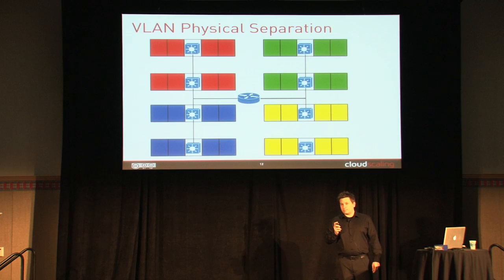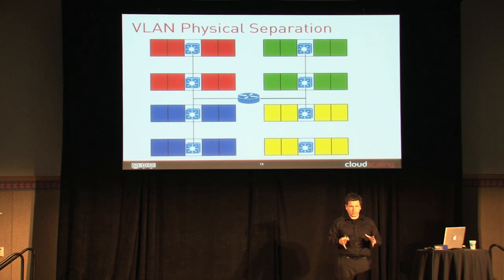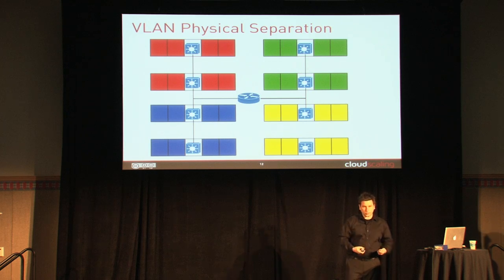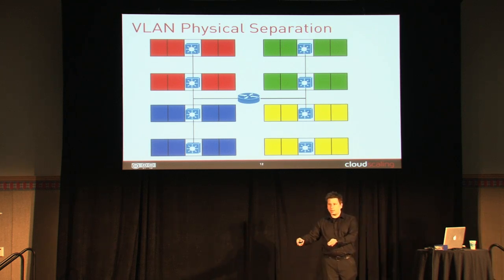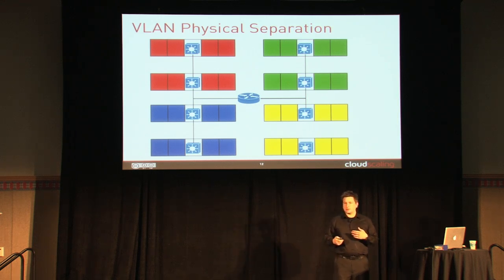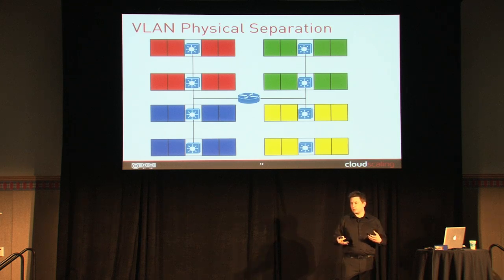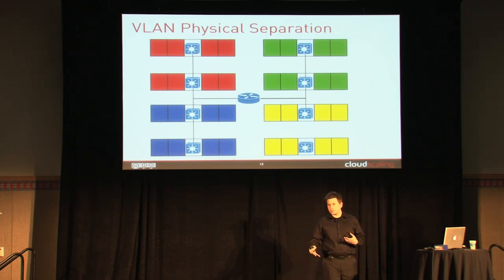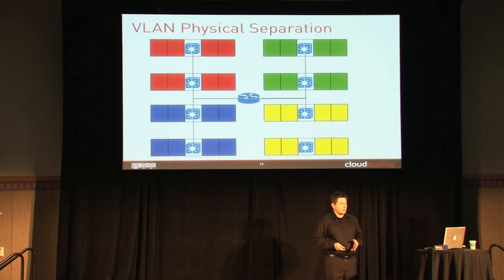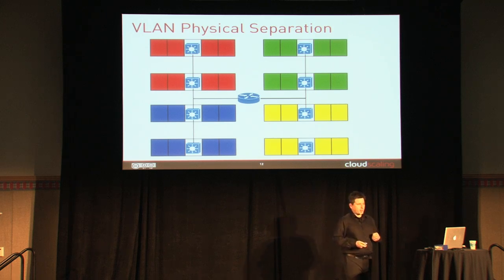VLANs were often used for physical separation — one part of the data center would have one VLAN, another part another VLAN. When you wanted to move a server from one VLAN to another, you would literally unscrew it, move it across the data center, and screw it in again. That was not very manageable. Most of us are aware of the concept where every VLAN goes everywhere — you don't move a server, you just change the port assignment, or trunk multiple VLANs to a server and let the server decide.